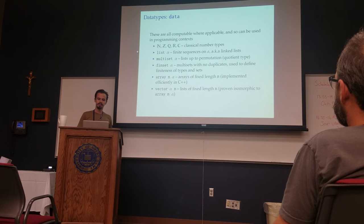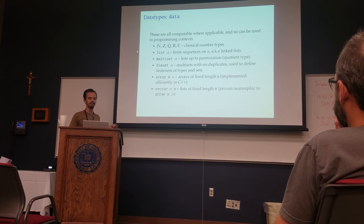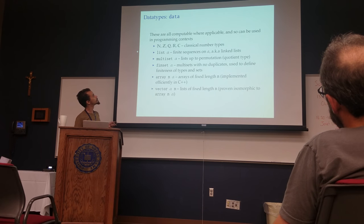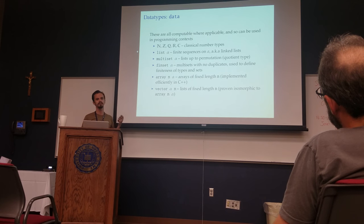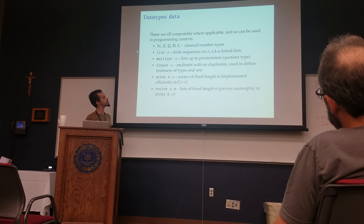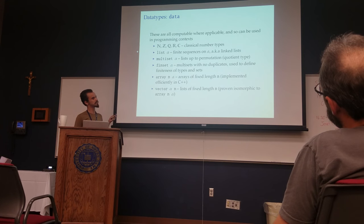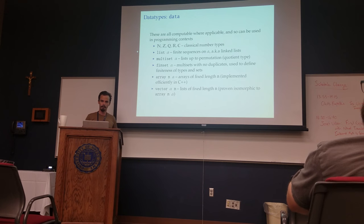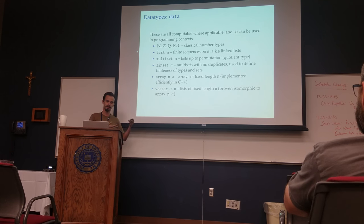The data types: the data folder contains things like the classical number types — the natural numbers, the integers, the rational numbers, the reals, the complexes. The meaning behind data types here is that these are things you can compute with. So these are data you can use in a programming context. A list can be used in a math context as a finite sequence, but also as a linked list, because it is a linked list.